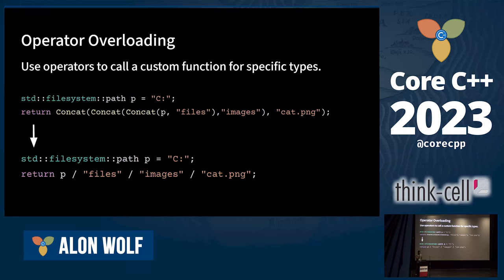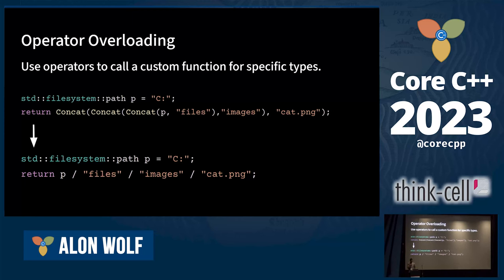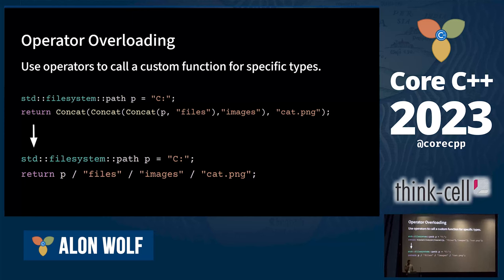We can also use operator overloads to call a custom function for specific types, and this way make our code more expressive. In this example, the divide operator is a good choice because it is often used to write file paths in operating systems. Also, because the operator is left associative, we can chain multiple strings to a path.